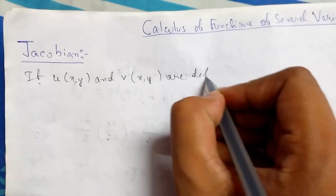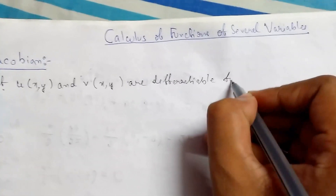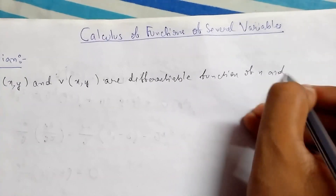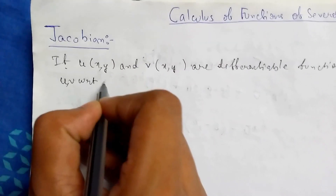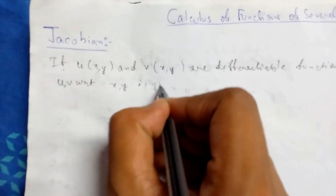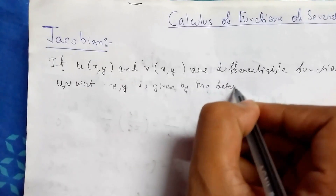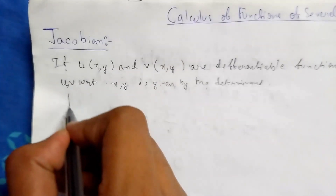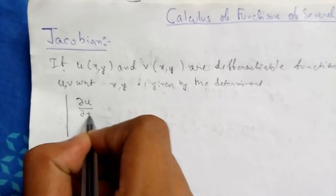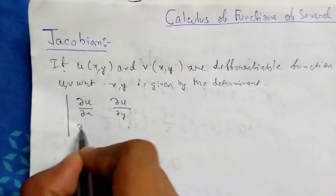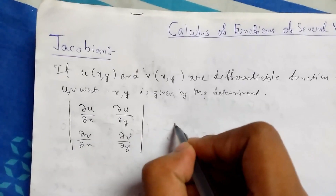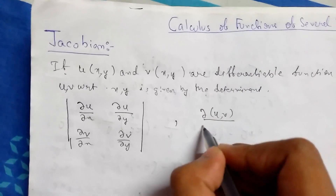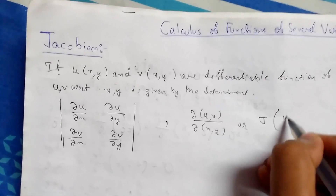and both are differentiable functions of x and y, then the Jacobian of u comma v with respect to x and y is given by the determinant: del u upon del x, del u upon del y, del v upon del x, del v upon del y. This is the determinant representation.